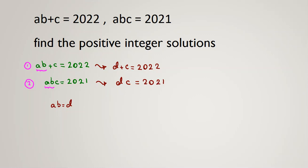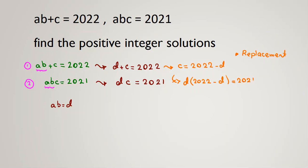One important idea is changing variables, and the second is replacement. I will use replacement here. From the first equation, C equals 2022 minus D. Replacing C in the second equation: D times (2022 minus D) equals 2021. Expanding: 2022D minus D squared equals 2021.